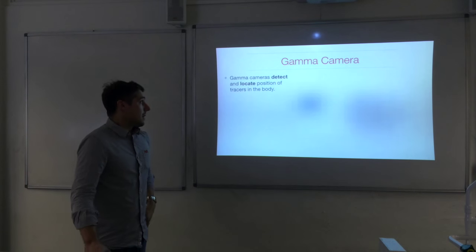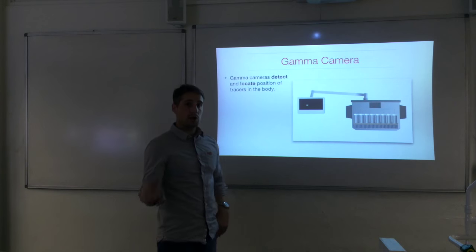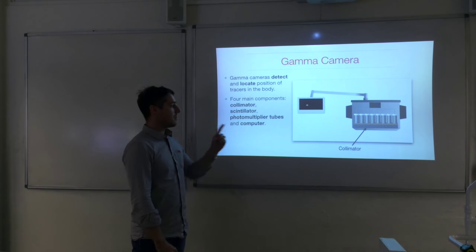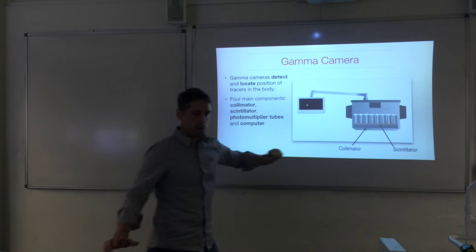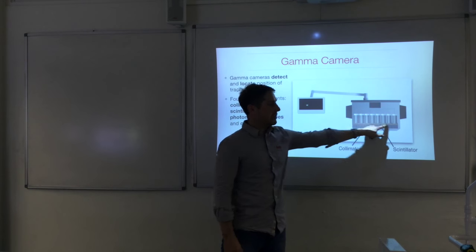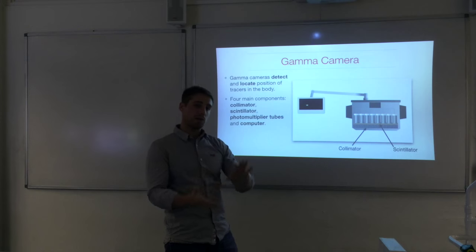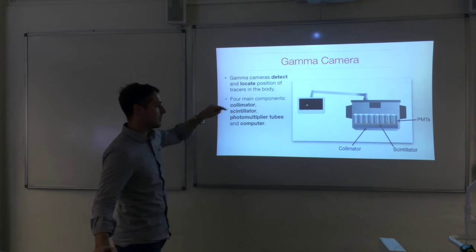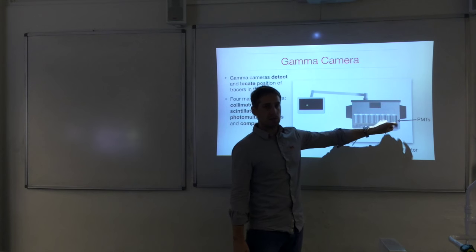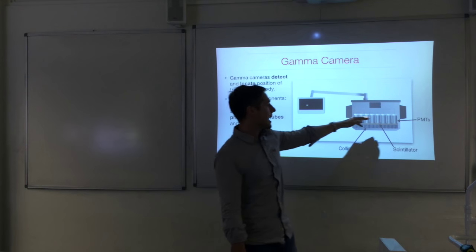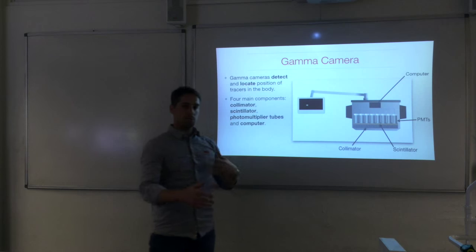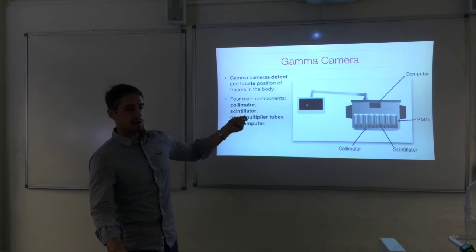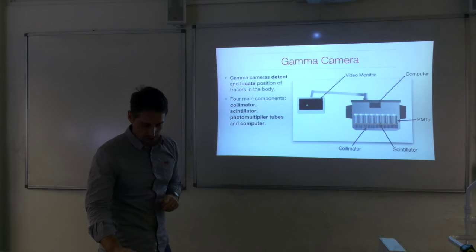The gamma camera is used to detect and locate where the tracer is in the body. There are four main components: the collimator — an array of lead tubes at the bottom; the scintillator material, which behaves like the image intensifying screens we've seen with x-rays; the photomultiplier tubes (PMTs), which convert flashes of light into electronic pulses that are amplified; and the computer, which processes all the information and displays an image on the video monitor for the radiologist.